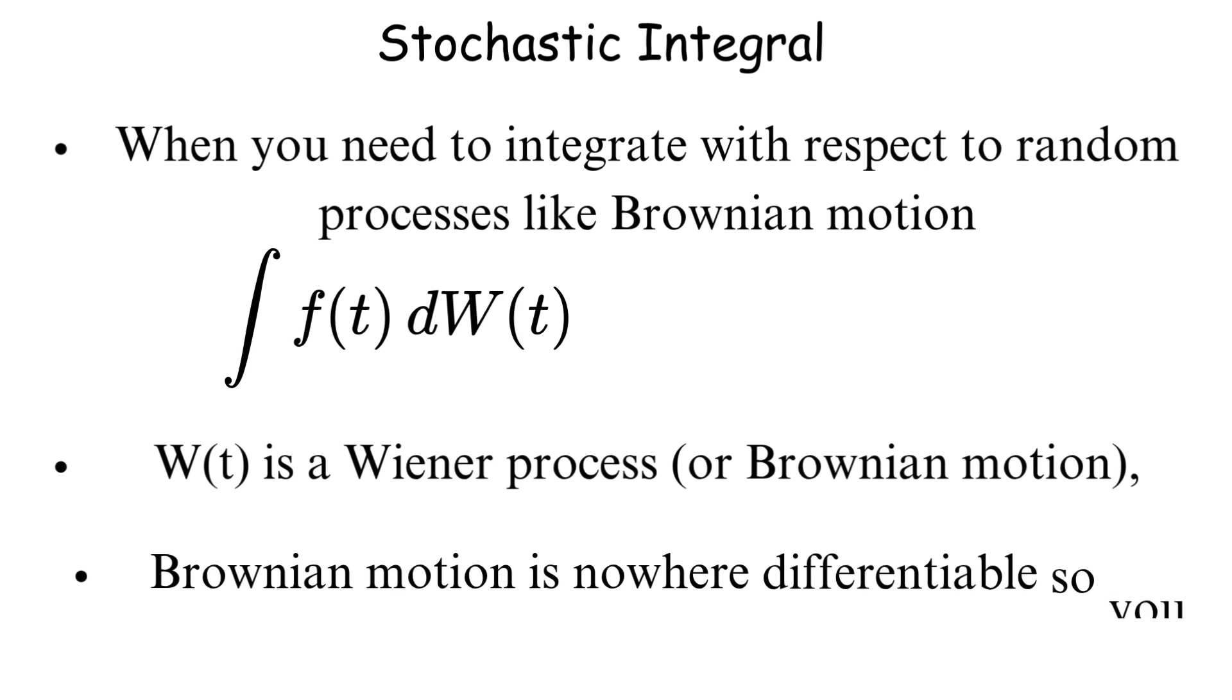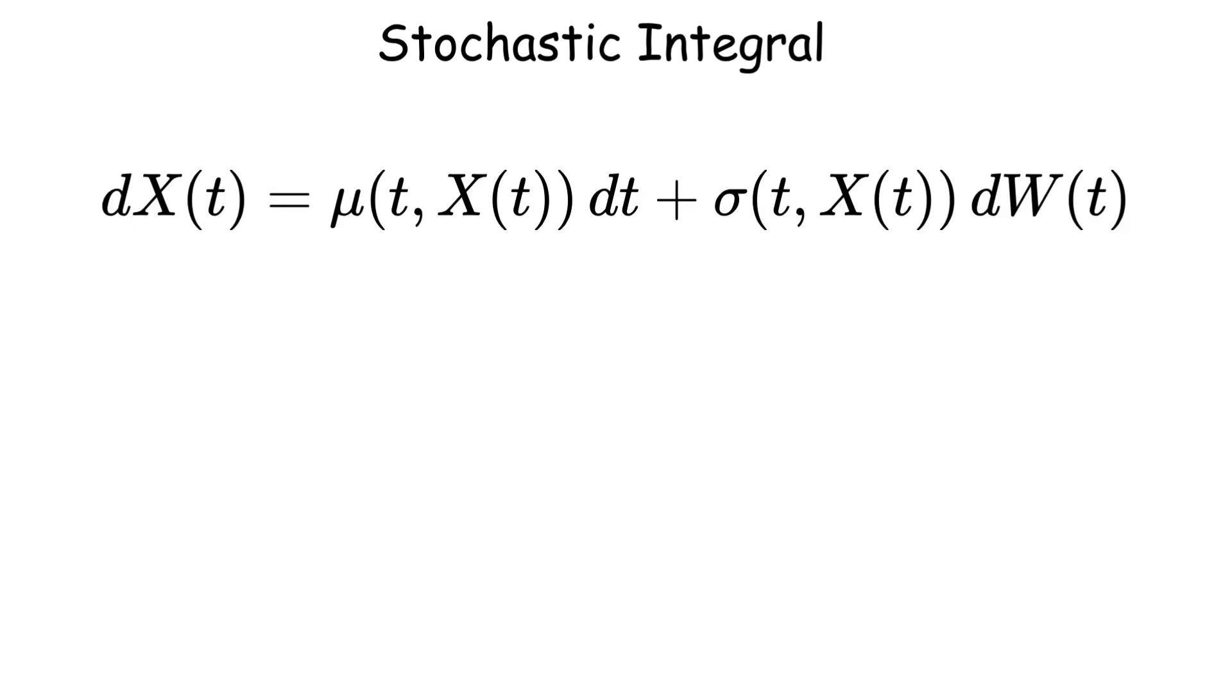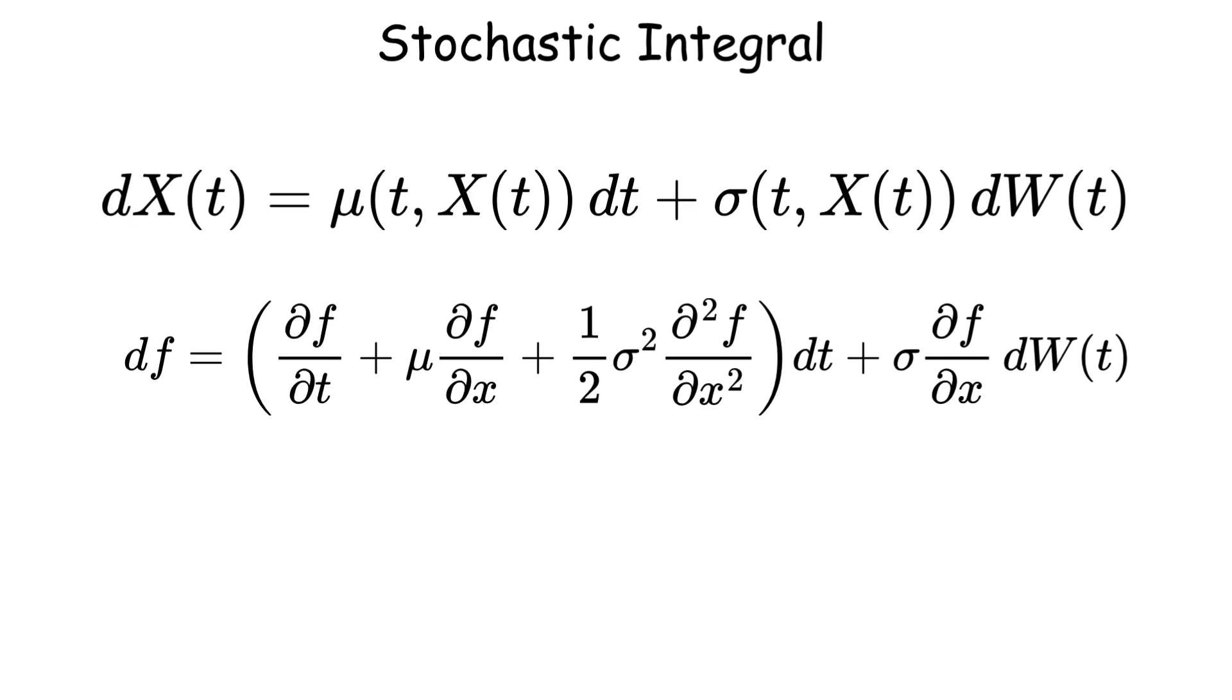Brownian motion is nowhere differentiable, so you can't use normal calculus rules. Instead, you need Ito calculus, where even the chain rule gets extra correction terms, because randomness doesn't behave like normal functions.